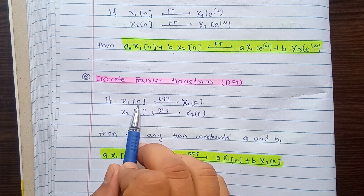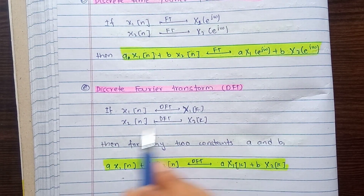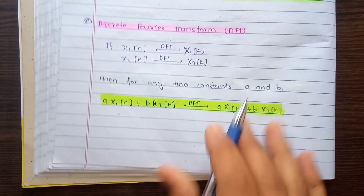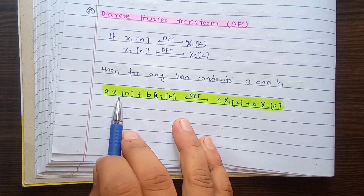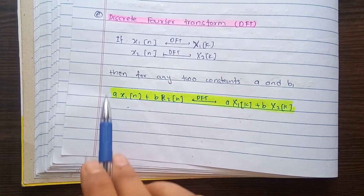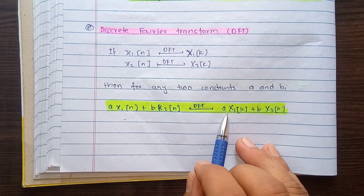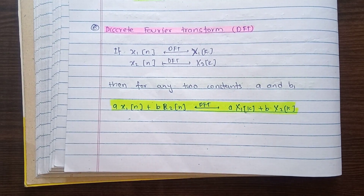For the Discrete Fourier Transform (DFT): x1n transforms to X1K and x2n transforms to X2K. The linearity condition is satisfied when A·X1N + B·X2N as input gives A·X1K + B·X2K as the output linear combination, covering both continuous time and discrete time systems.